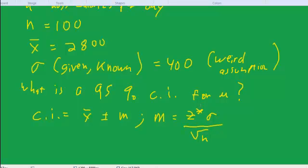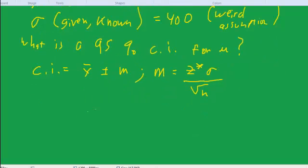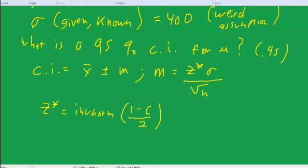And where does z-star come from? Remember, z-star equals the inverse normal function, invnorm of 1 minus the confidence level over 2. Confidence level will be 0.95 for 95%. So, invnorm of 0.05 over 2, or invnorm of 0.025. Invnorm of 0.025.